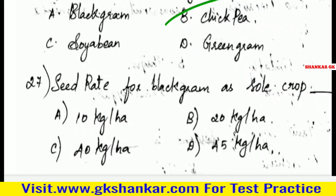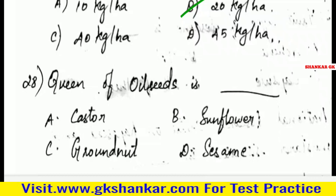Twenty-seventh question: Seed rate for black gram as sole crop is — A. 10 kg per hectare, B. 20 kg per hectare, C. 40 kg per hectare, D. 45 kg per hectare. Answer: B. 20 kg per hectare.